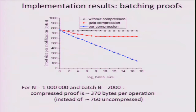As a result of this compression: the black line is no compression, the red line is Gzip applied, and the blue line is ours. On the x-axis is the log of the batch size; on the y-axis is proof length per operation. With 2,000 operations together — which is what you need for 1,000 transactions, since each has a minus and a plus — out of a million keys, you save about a factor of two in proof length per operation. You get about 370-byte proofs per operation on your dynamic authenticated data structure with 2,000 operations batched.